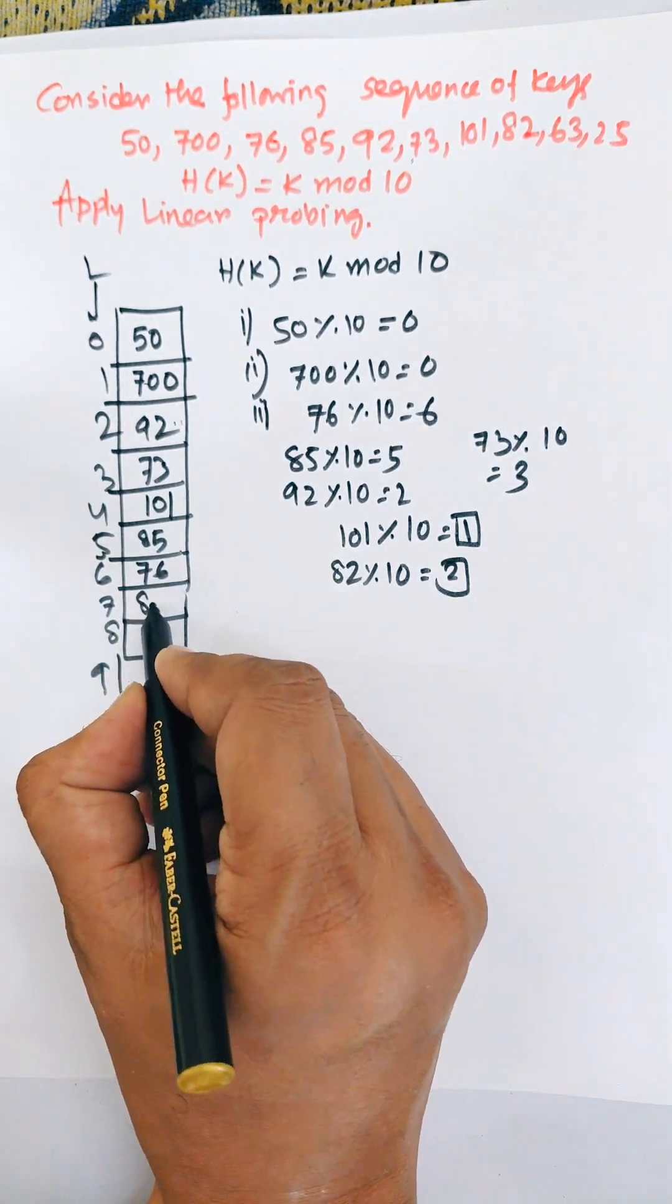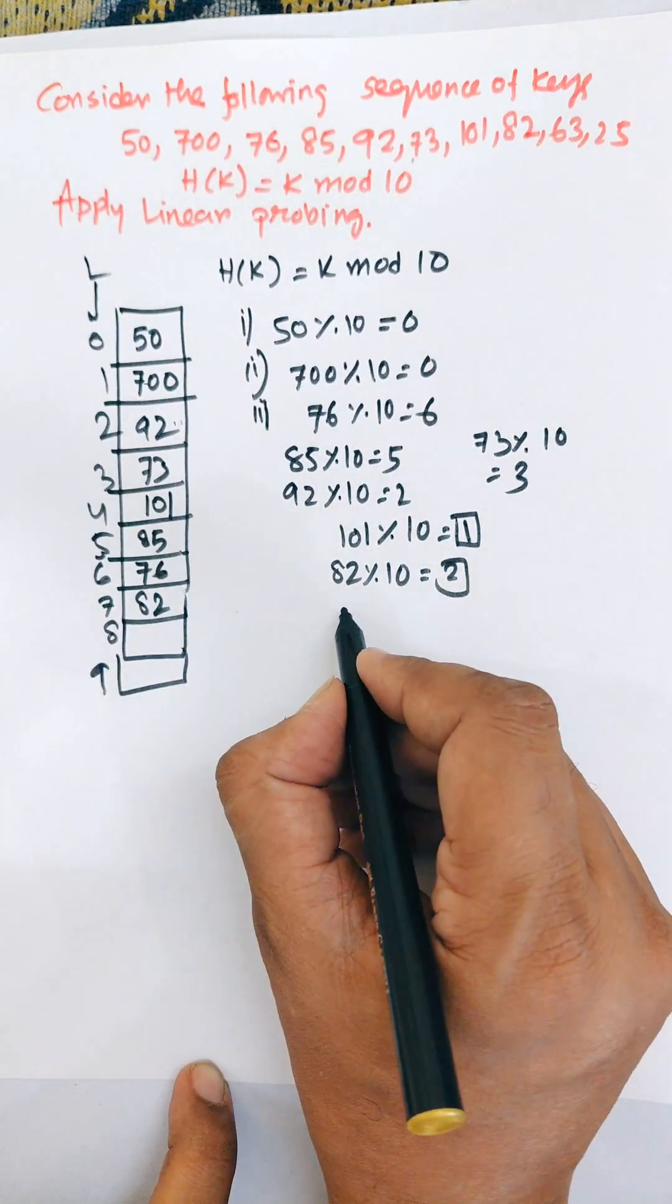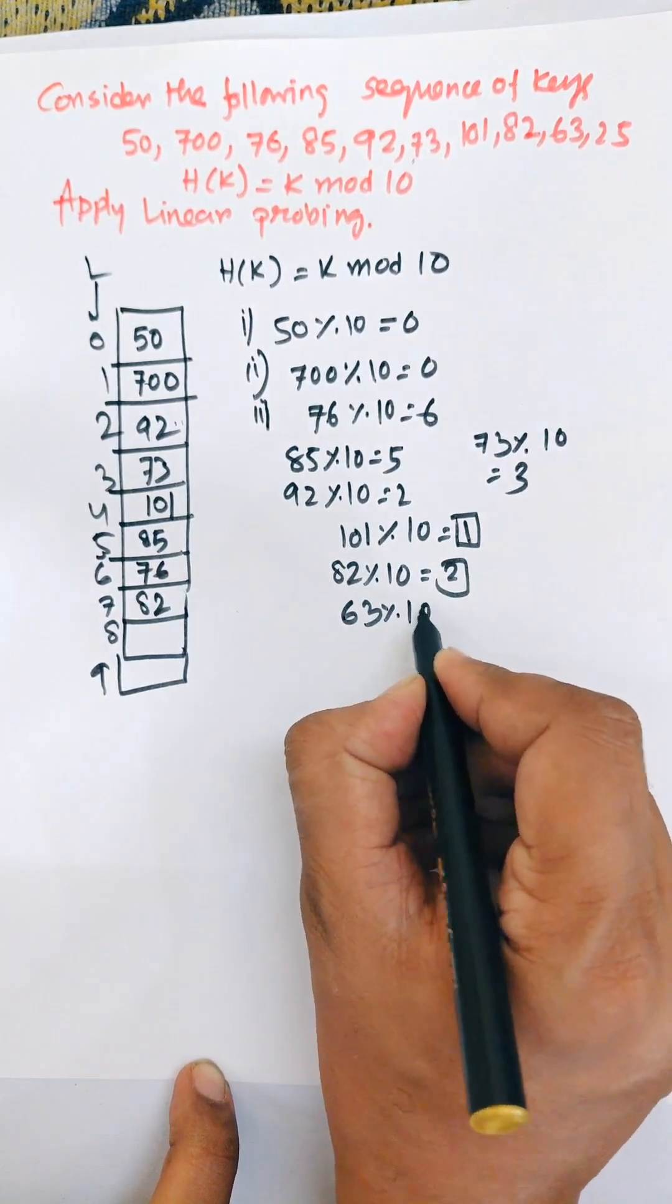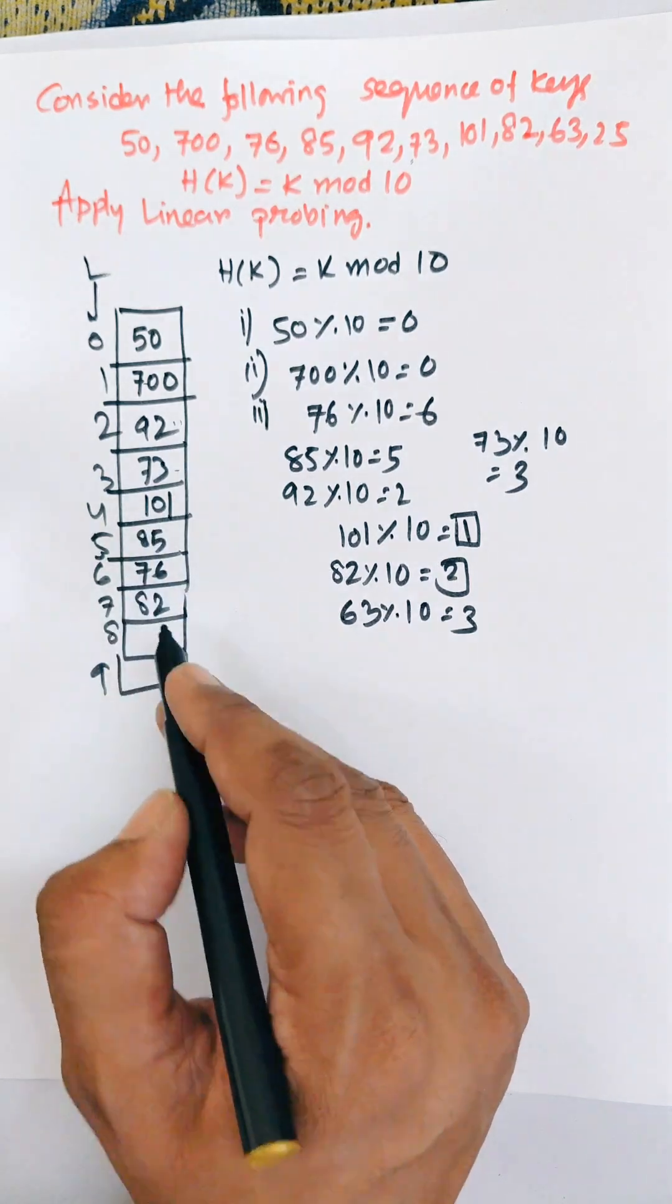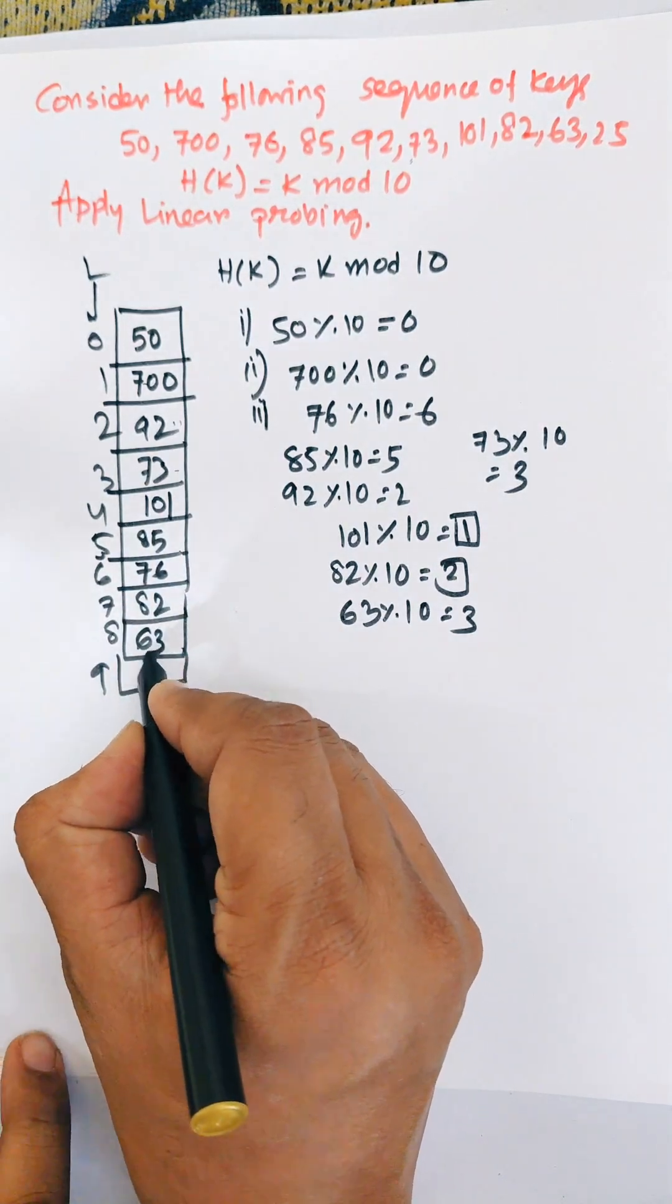Now 63 mod 10 equals 3, so location 3, but 3 is already occupied. We find the next location: 4 is also occupied, then next, next, next. So 63 will allocate in location 8.